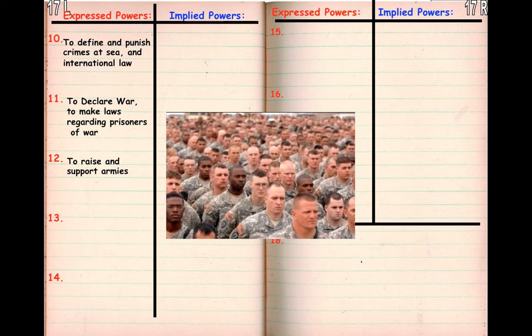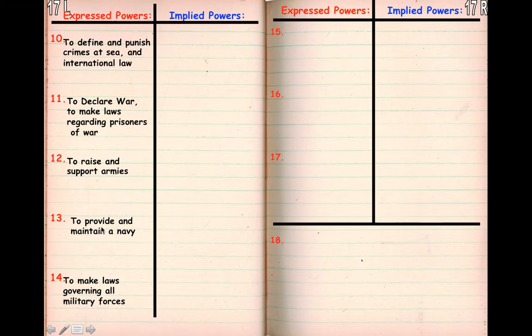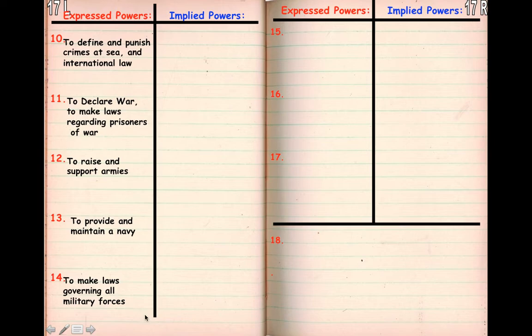After that, we have the power to raise and support armies, to provide and maintain a military, and to make laws governing all military forces. You can kind of see the thought process — an army, a navy, and then all-encompassing in case they forgot anything. Remember, they did not have an air force at this time; they did not think about Marines, Coast Guards, or a space force. So they said, in case we forgot anything, let's cover all military forces.